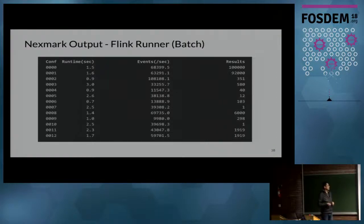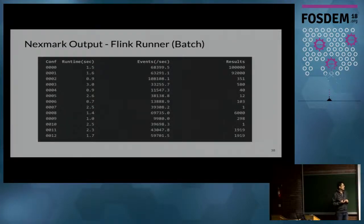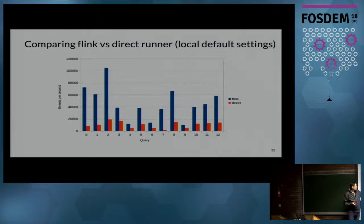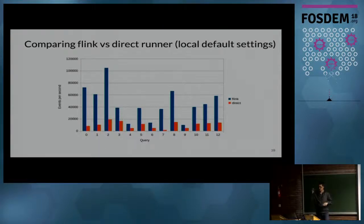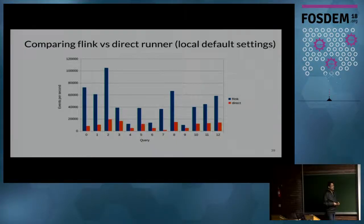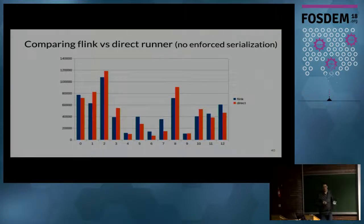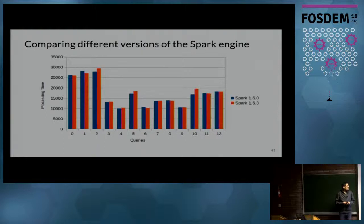This is an example output of an execution — a local run showing the time each query took, the results, and the throughput. More interesting is to see a comparison. In blue is the Flink runner — bigger is better — and the smaller bar is the direct runner. There's a huge disproportion, but it makes sense because the direct runner serializes everything to enforce serialization. If we disable the serialization parts of the direct runner, the results are much more similar.